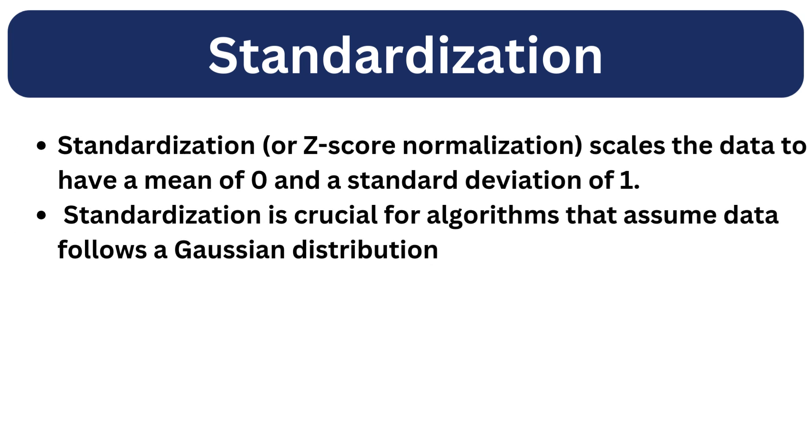Now let's talk about standardization. Standardization, or z-score normalization, scales the data to have a mean of 0 and a standard deviation of 1. Standardization is crucial for algorithms that assume data follows a Gaussian distribution, such as linear regression, logistic regression, or any algorithm that uses gradient descent.